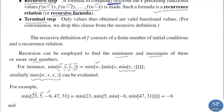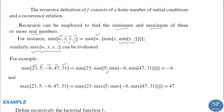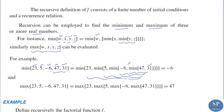For example, suppose we need to find the minimum value of {23, 5, -6, 47, 31}. Using the formula, we first find min(47, 31) = 31, then min(-6, 31) = -6, then min(5, -6) = -6, then min(23, -6) = -6. So the minimum value is -6.